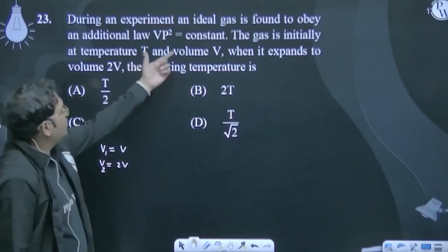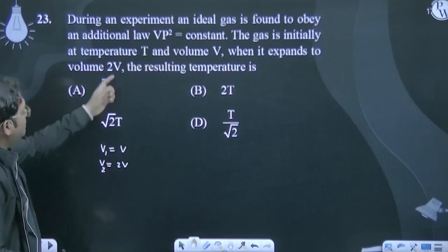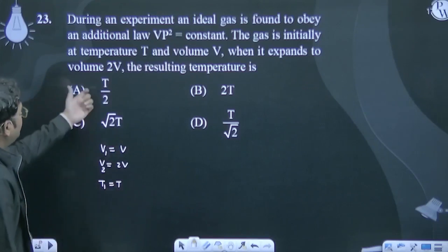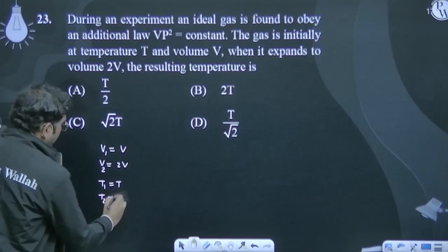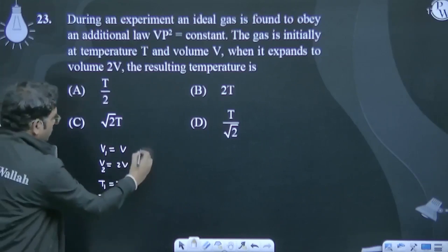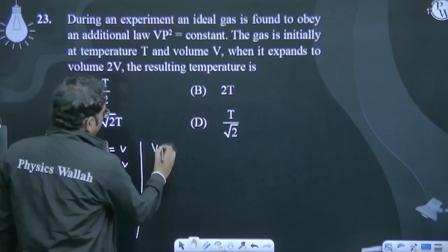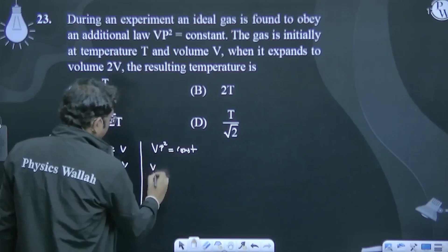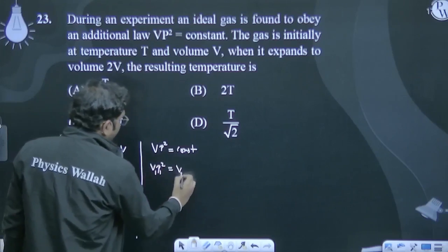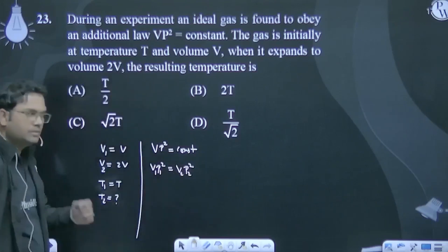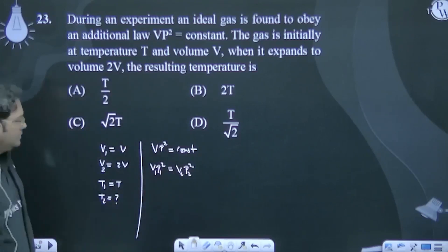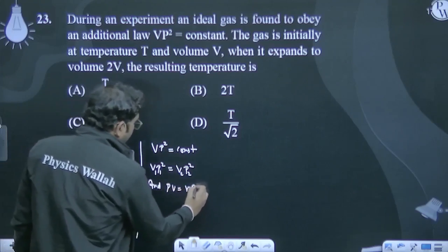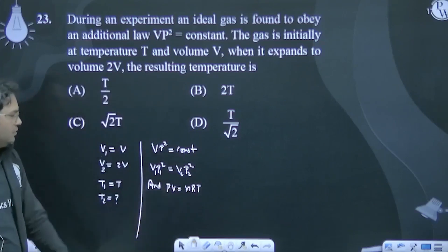This law was followed, so VP² equals constant. VP² for initial state equals VP² for final state. And we know VP equals nRT.